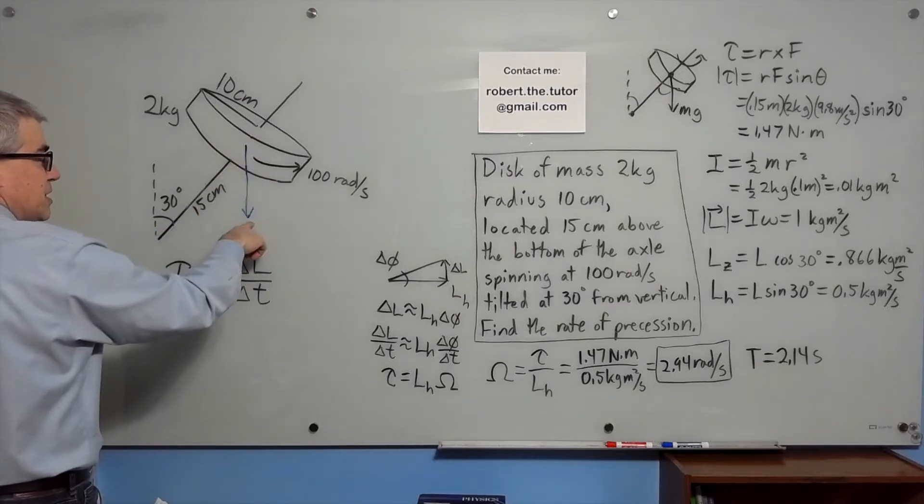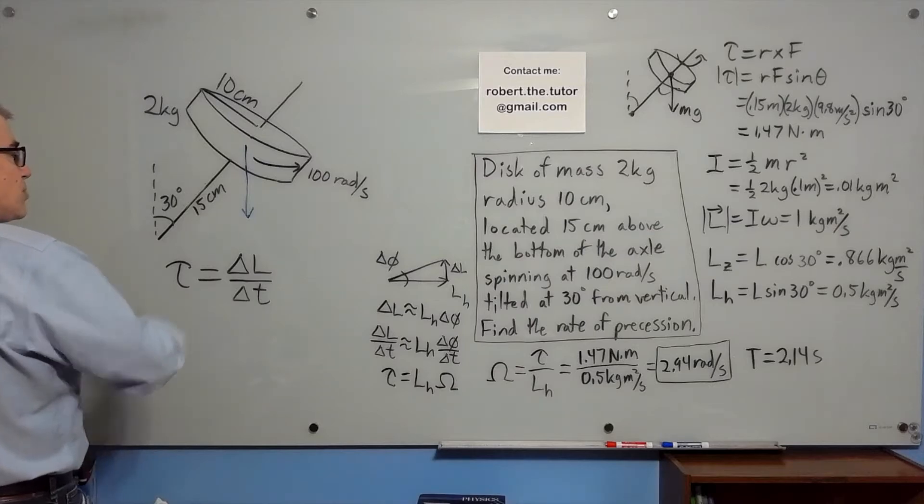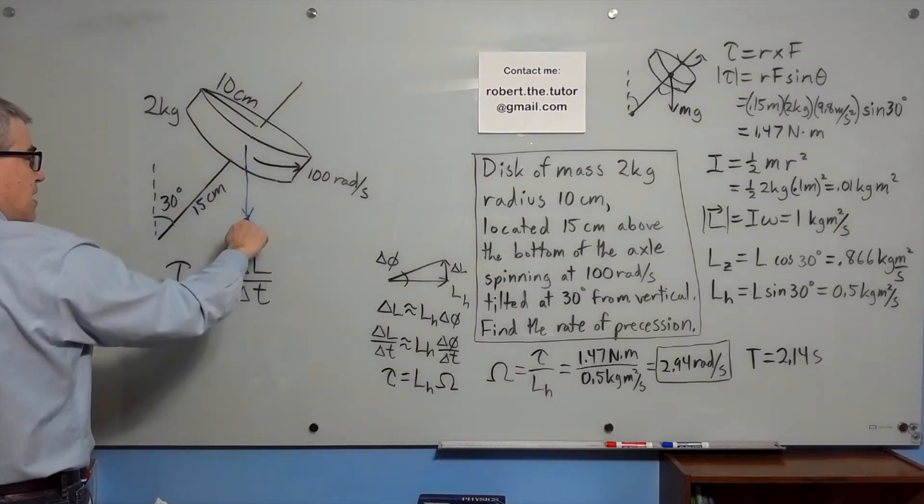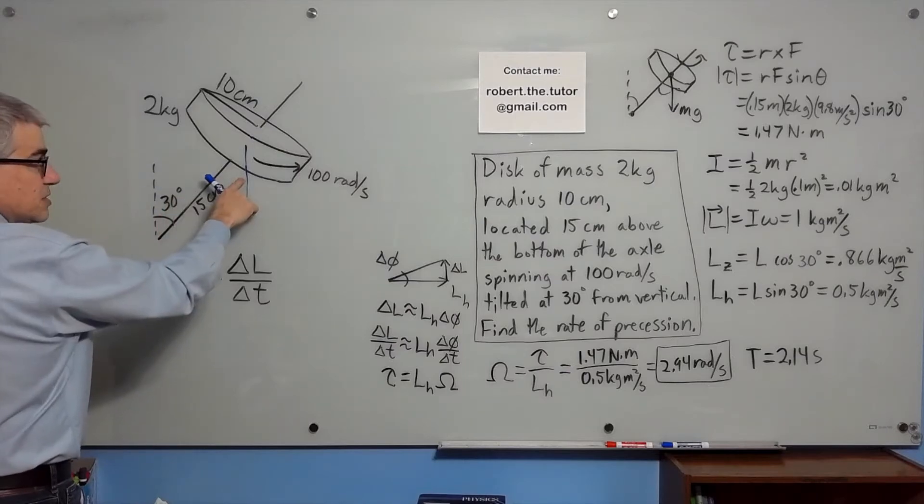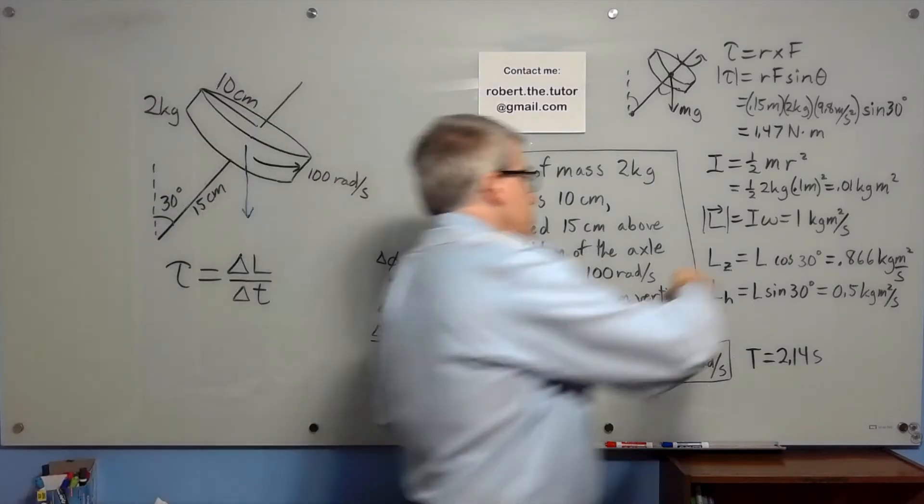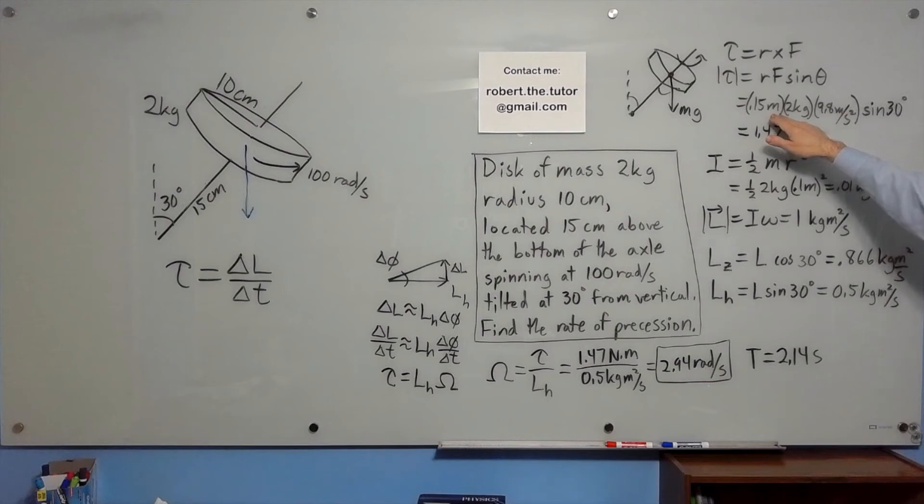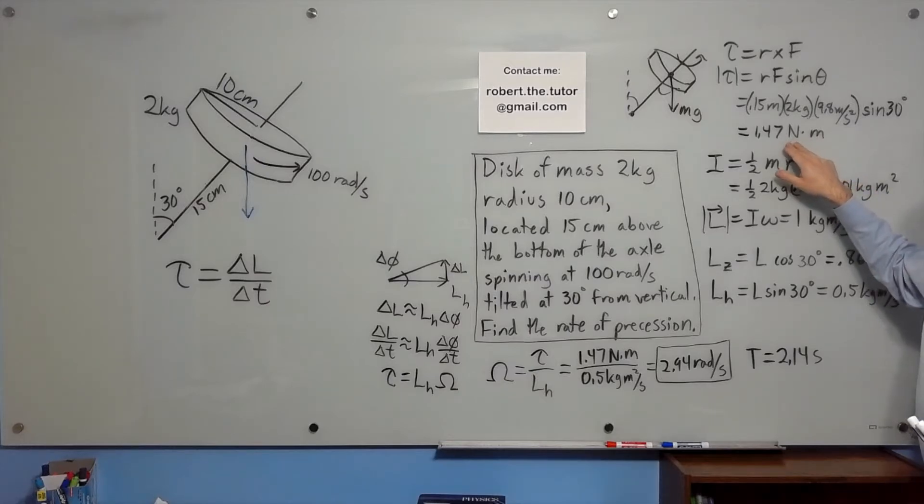The force of gravity is going to be acting right here. We have the torque is R times F times the sine of the angle between them. And if this is 30, so is this. So we have 0.15 meters, 2 kilograms, 9.8 meters per second squared, sine 30. And we end up with a torque of 1.47 newton meters.